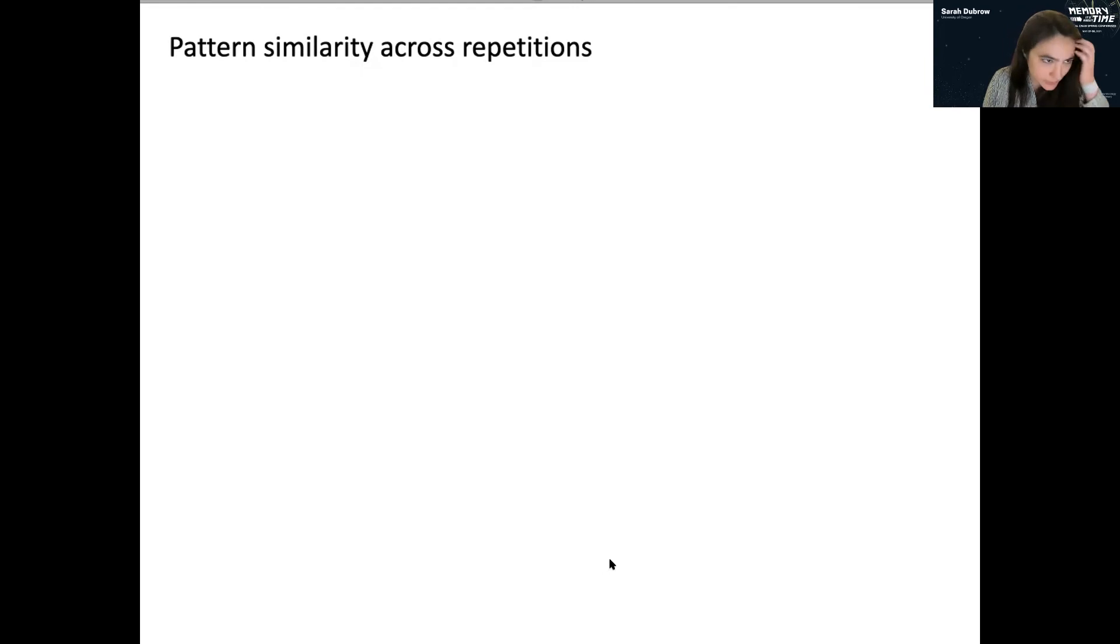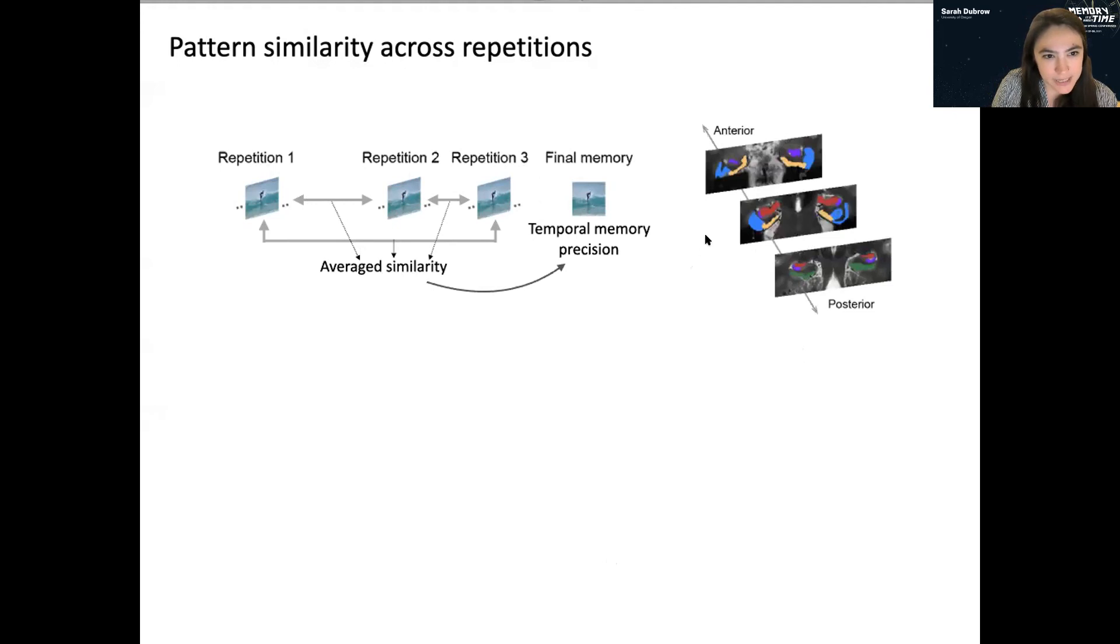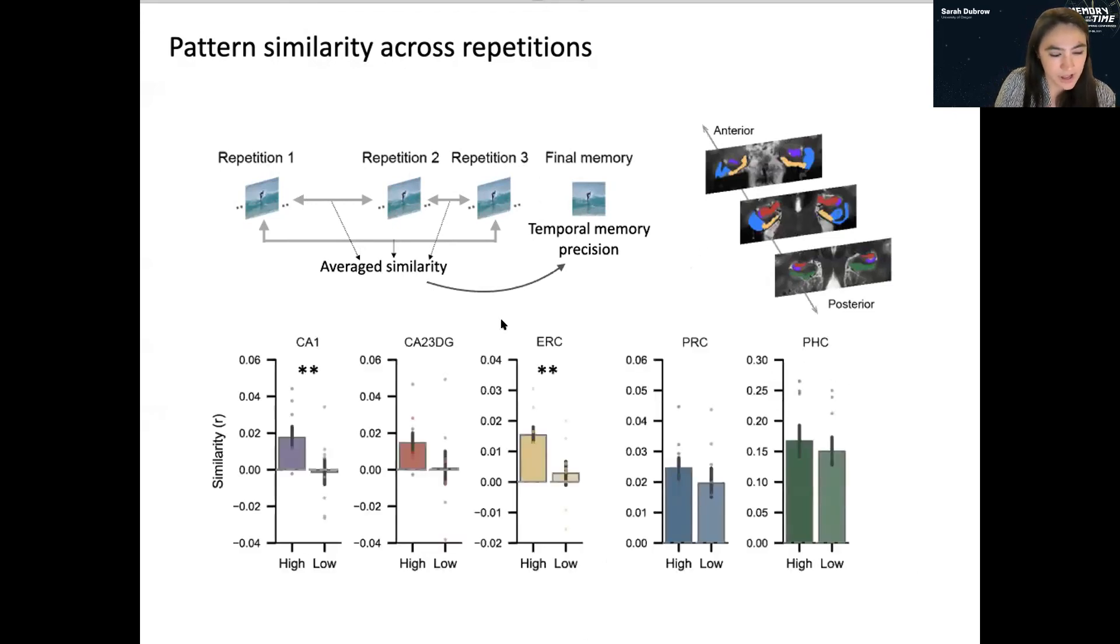So turning to the neural data, we're interested in whether there was encoding retrieval similarity or repetition to repetition similarity that predicted temporal memory. So as a first pass, we just took the average similarity from each pair, so each pairwise correlation and split that into high and low temporal memory precision. And we focused in on MTL. And this is what we found. So we were excited because CA1 showed significantly higher pattern similarity for high precision versus low precision items. And so did the entorhinal cortex.